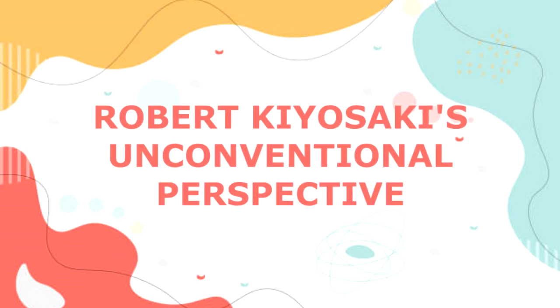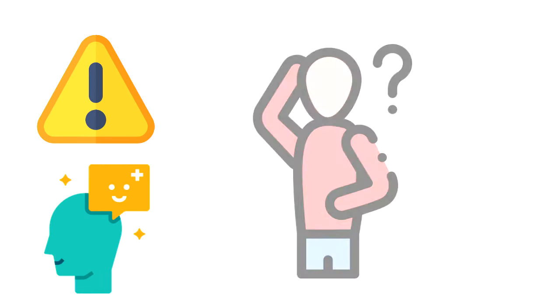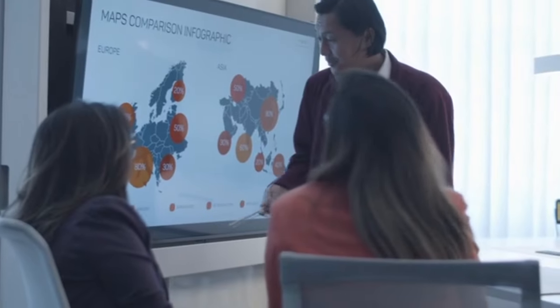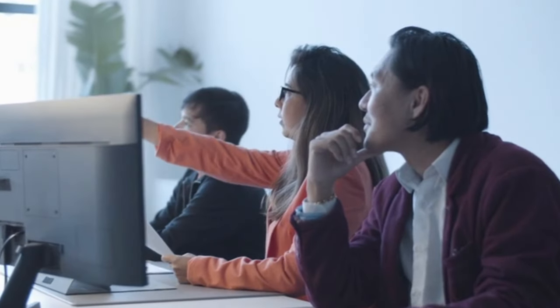Robert Kiyosaki's perspective on the economy is a blend of caution and optimism, a combination that might seem contradictory at first. While he's always alert to the market's undulating patterns, he doesn't view downturns with dread. Instead, he perceives them as rare opportunities.